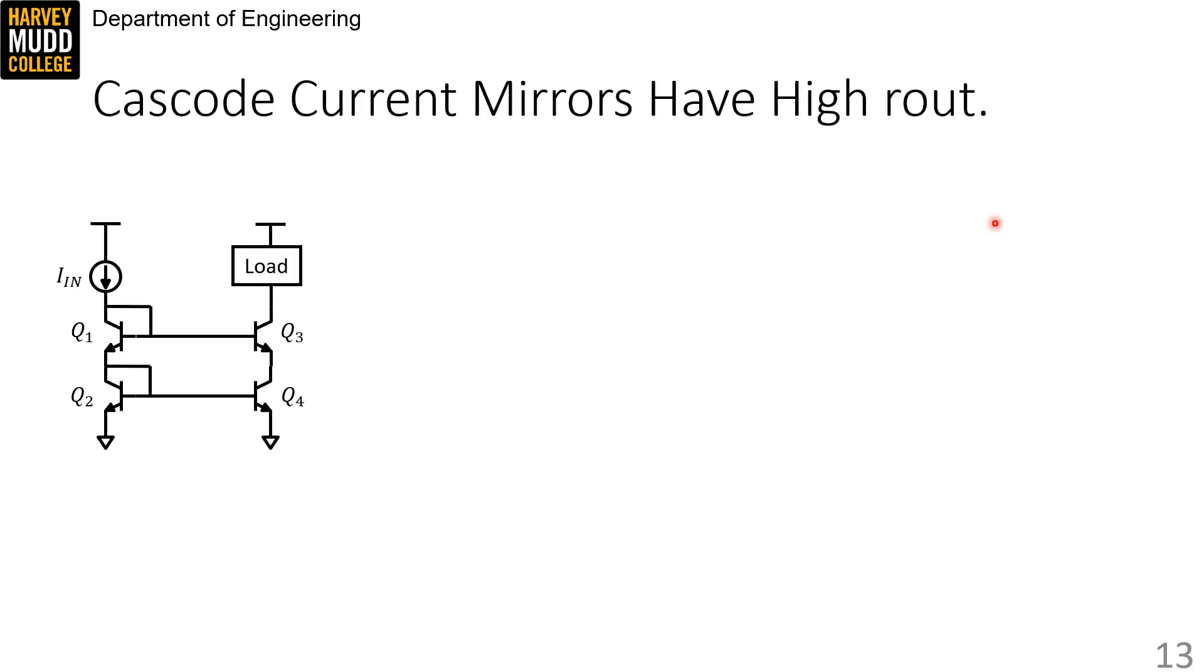My cascode mirror appears on the left of this slide. I just promised that cascode mirrors have high Rout, and we're going to prove it in the next two slides. Doing so will require small signal models. So pause this video and try making a small signal model for the cascode current mirror pictured here.